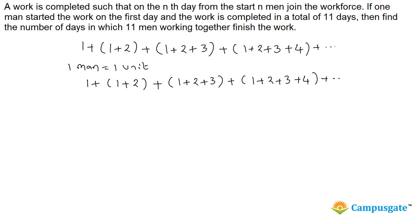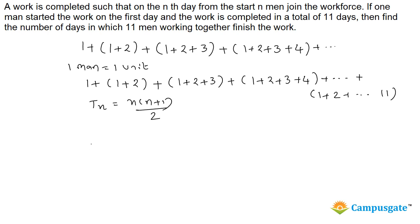They completed this job in a total of 11 days. It's not easy to continue this pattern till the 11th day manually, but we know on the last day there are 11 people total, so the sum goes from 1 to 11. To find the nth term T_n: on the fourth day there are 1+2+3+4 people, so the nth term is the sum of the first n natural numbers, which equals n(n+1)/2.